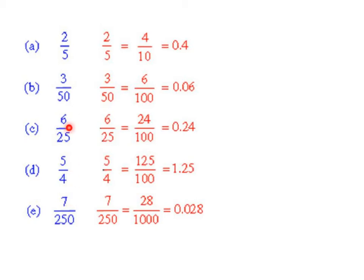So what do you do if you have fractions that don't automatically have a 10, 100, or 1,000 underneath? Well, then you want to think: 5 times what gets me to 10, or 5 times what gets me to 100 or 1,000? Well, 5 times 2 will get me to 10, so I just multiply the top and the bottom by 2 and get an equivalent fraction of 4 over 10, and then I can turn that into a decimal. The same with 50 — 50 times 2 gets me to 100. And 25 times 4 gets me to 100, and 250 times 4 gets me to 1,000. So knowing those multiplication facts of what can get you to 10, 100, and 1,000 will be useful.